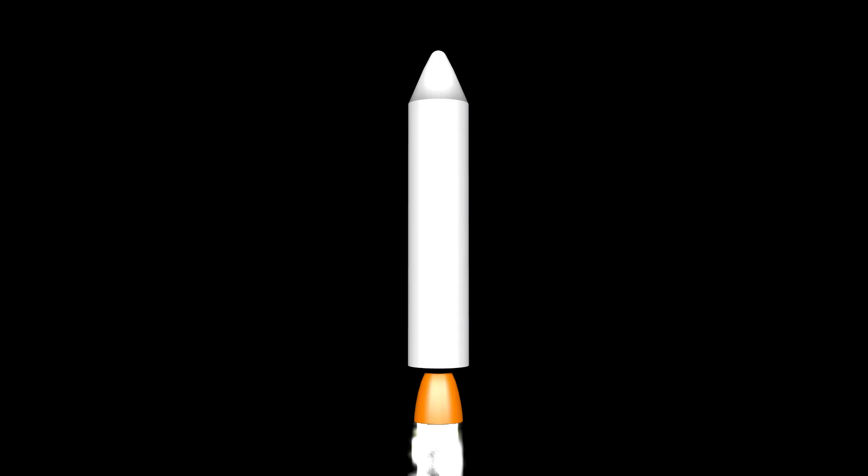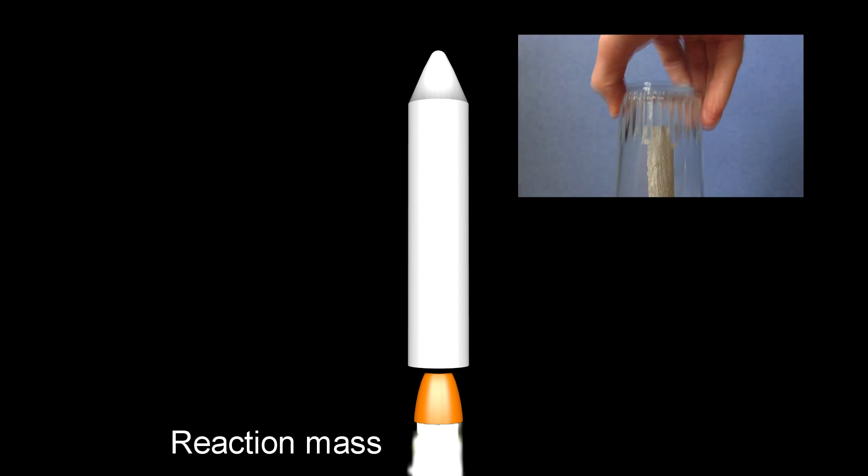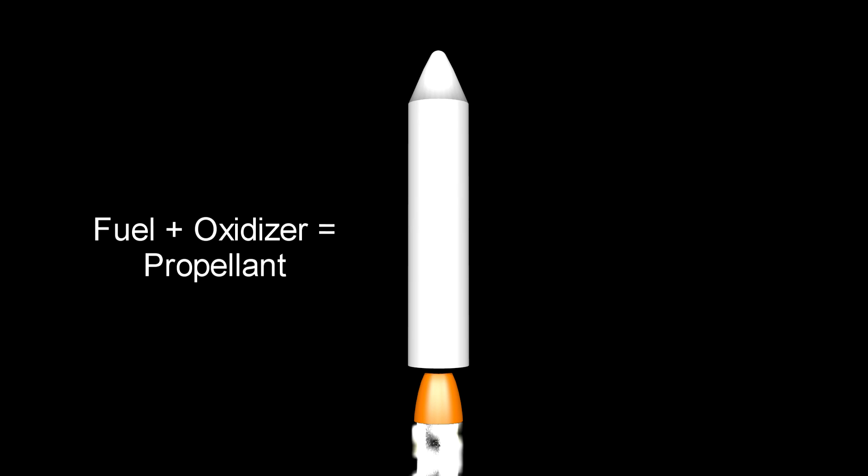In a rocket used for going from the Earth to space, the mass that's thrown out is the byproduct of burning a fuel with an oxidizer, usually liquid oxygen. This oxygen is needed just like it is down here on Earth for keeping a flame lit. Together they're called the propellant, since it's ultimately what propels the rocket forward.